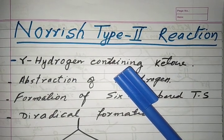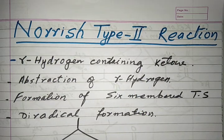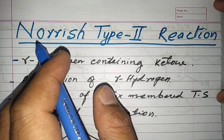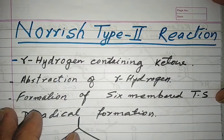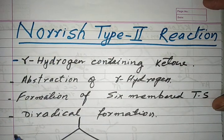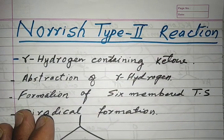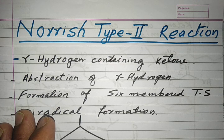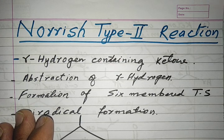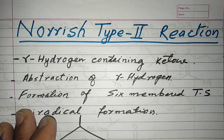Hello everyone, welcome to this lecture. Today we will discuss another very important reaction of organic photochemistry: the Norrish Type 2 reaction, also called the Norrish Type 2 process. It is very similar to the McLafferty rearrangement, which we discussed in previous videos under mass spectrometry.